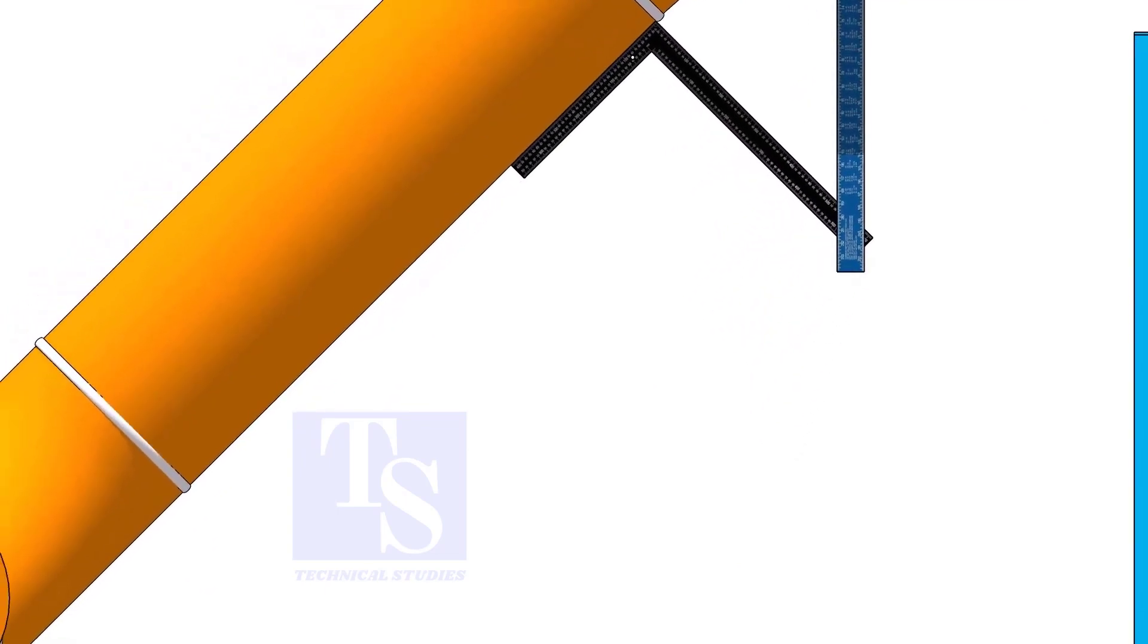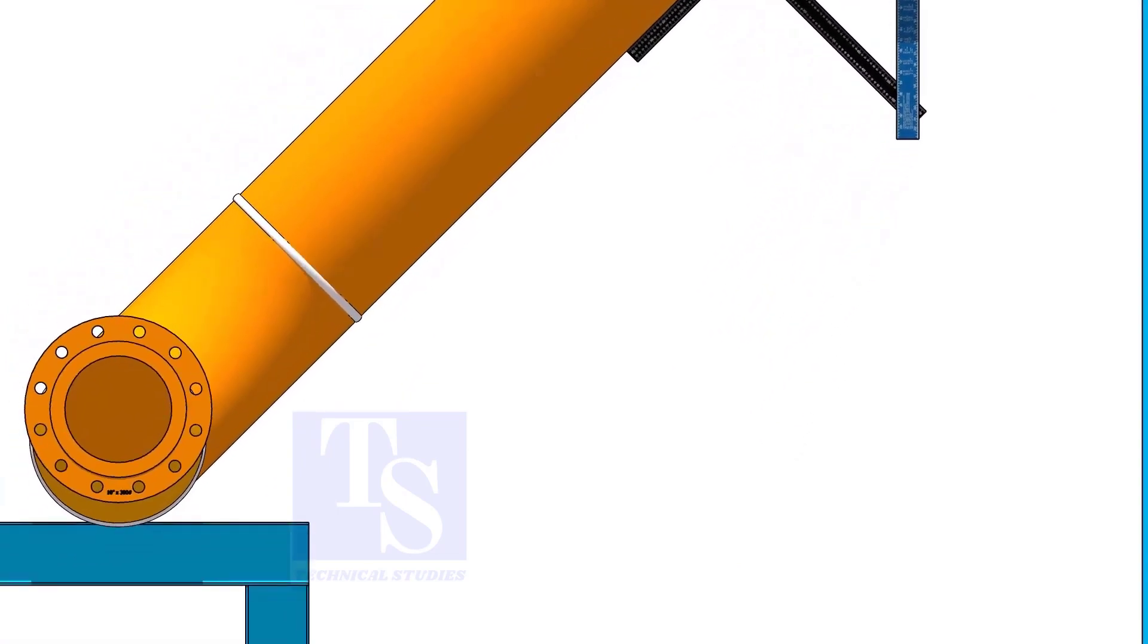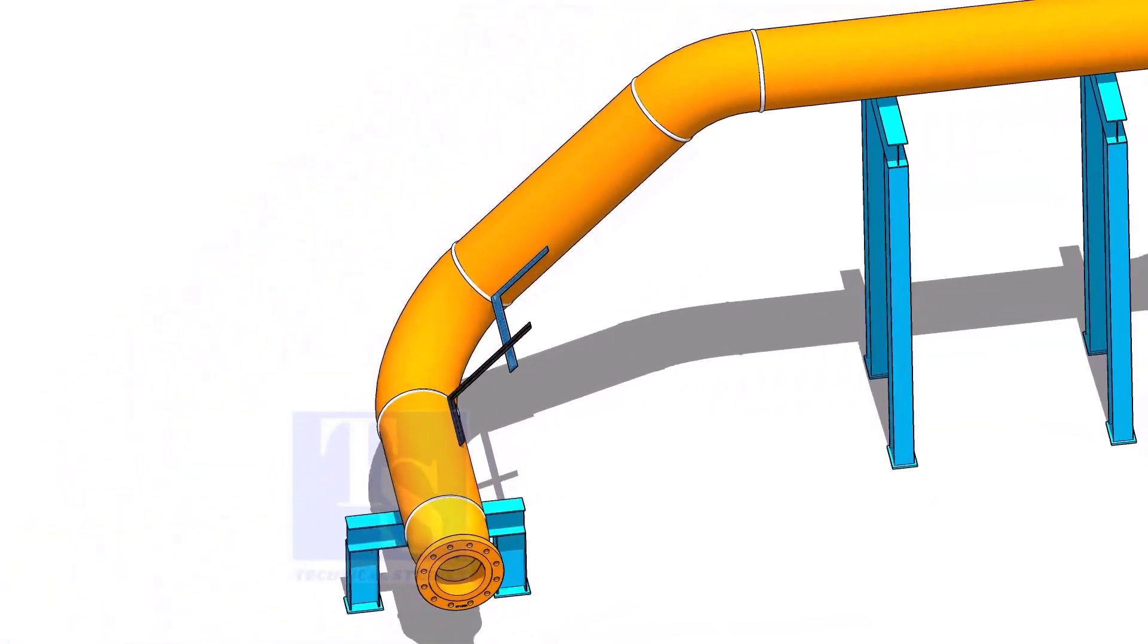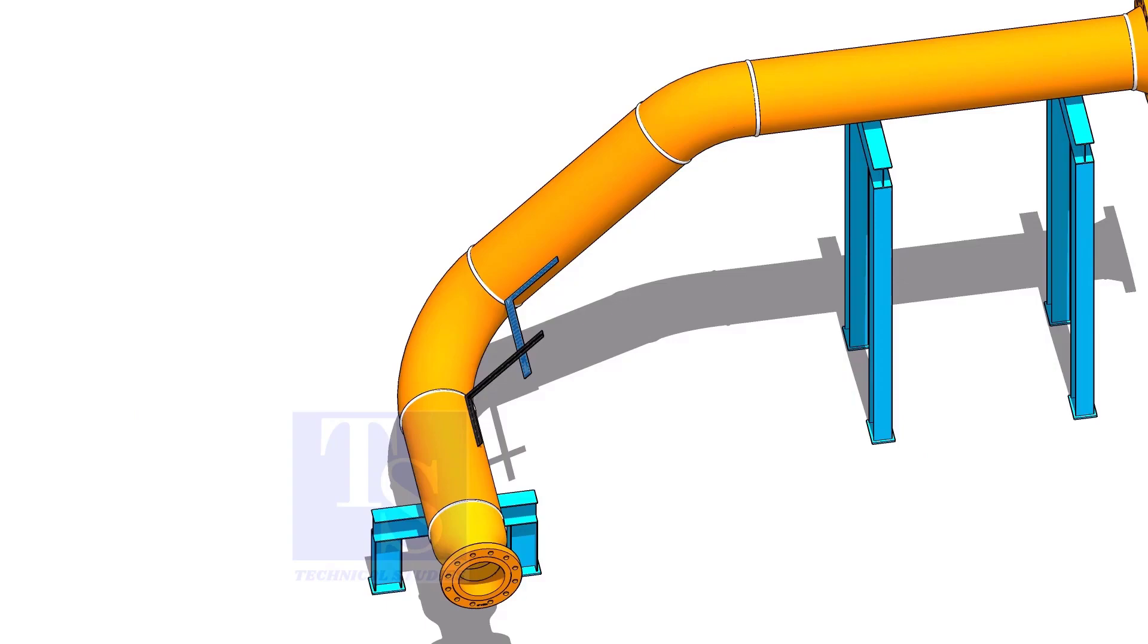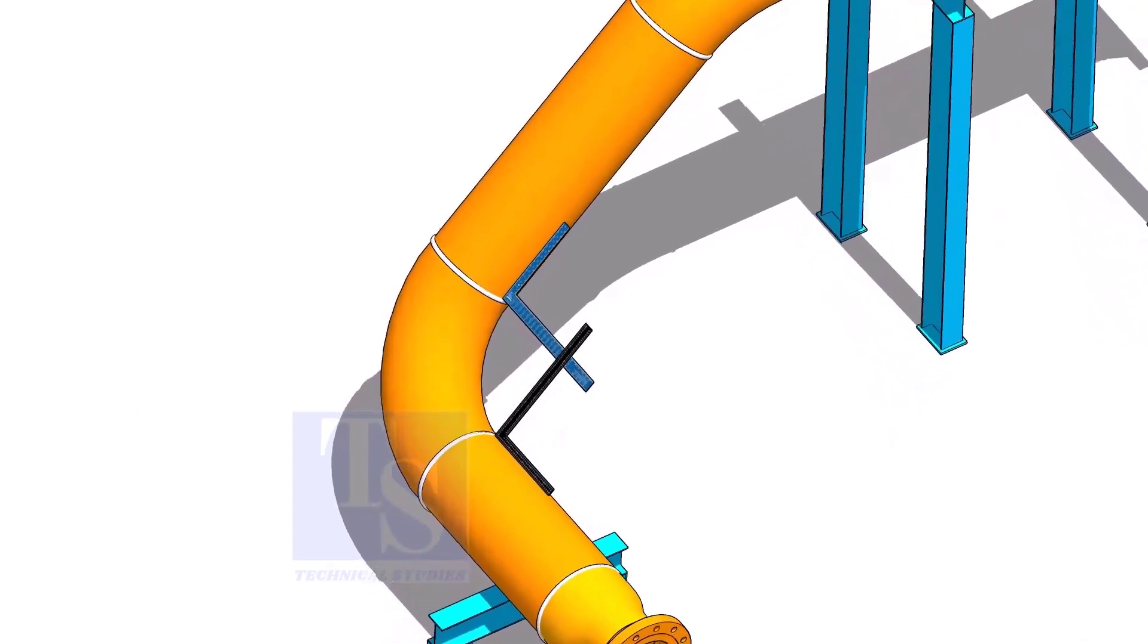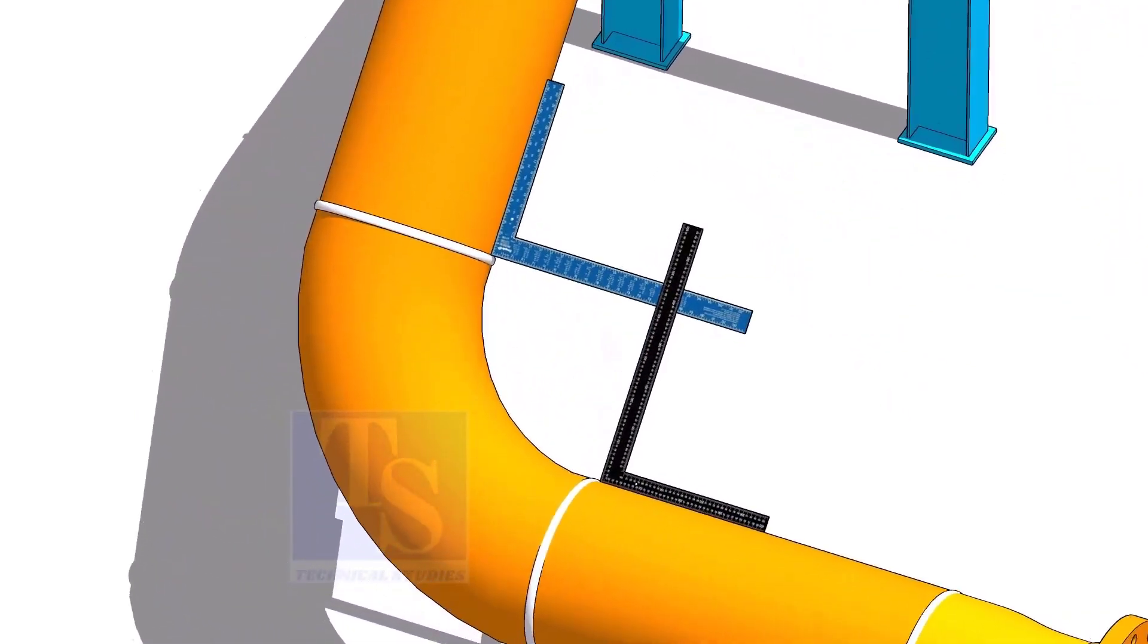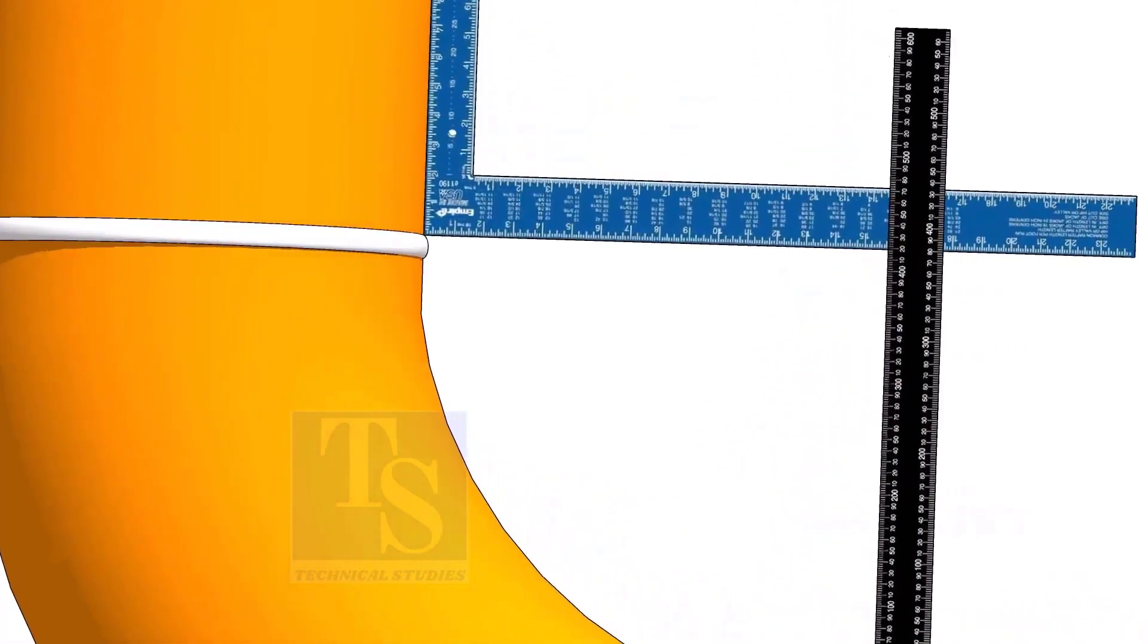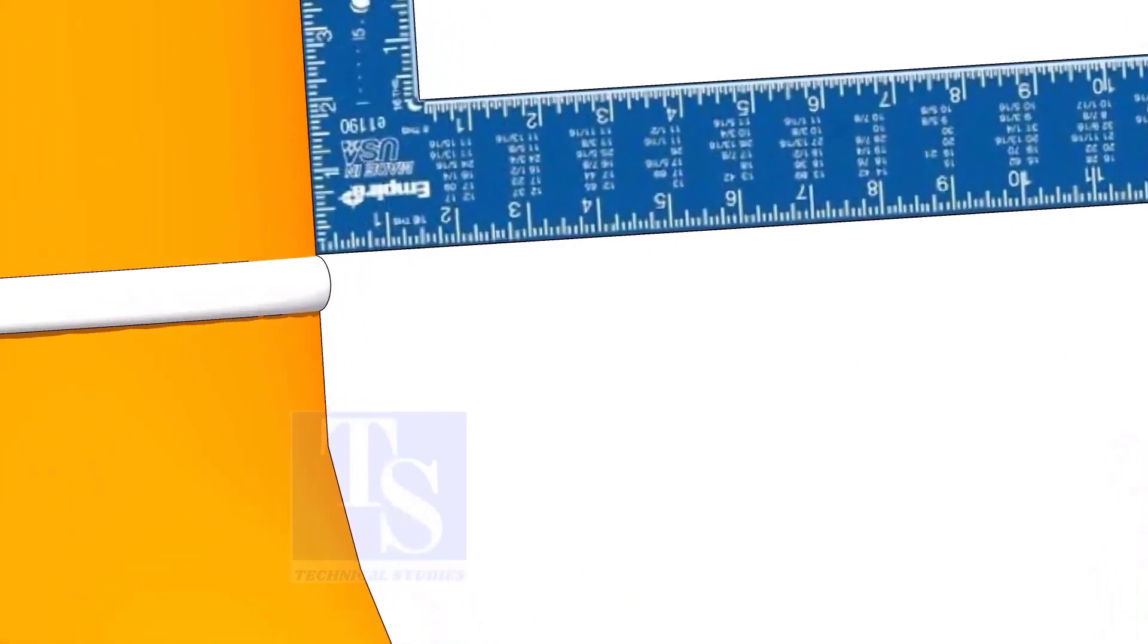Let us check the degree of one more elbow. Hold right angles, as mentioned in the previous exercise.